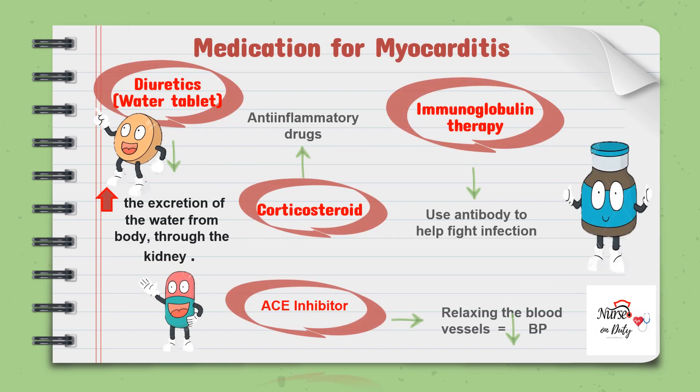Let's talk about medication. Diuretic is one of the choices for patients with myocarditis since the patient may have circulatory overload. The useful effect of diuretics is to promote diuresis or increase urine output — it increases the excretion of water from the body through the kidney. Next is immunoglobulin therapy, which uses a mixture of antibodies or normal immunoglobulin to treat a number of health conditions — for example, ITP or immune thrombocytopenic purpura in children, Kawasaki disease, and other autoimmune disorders.